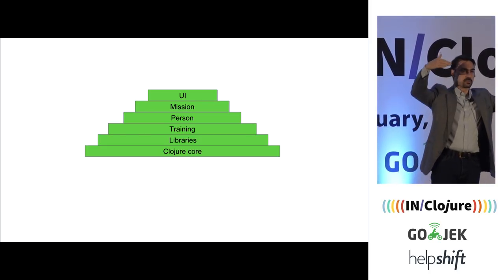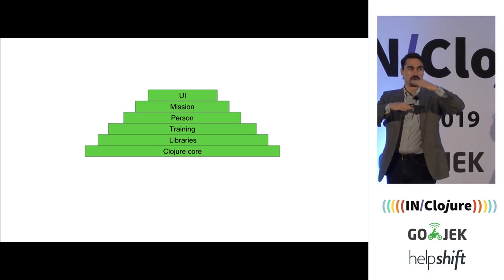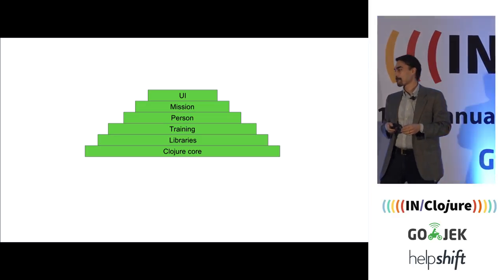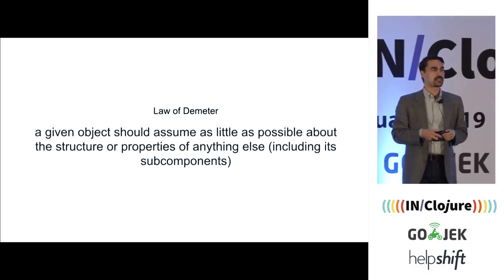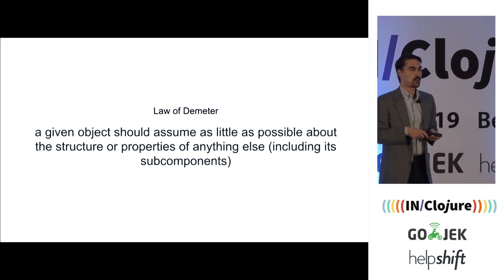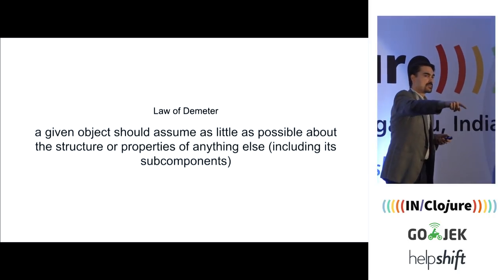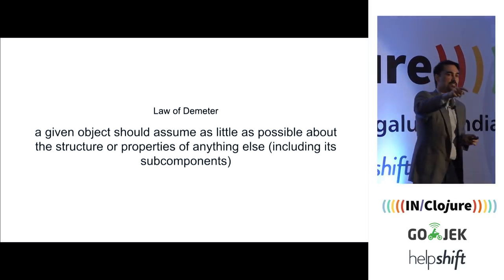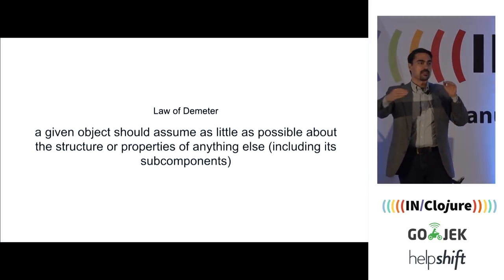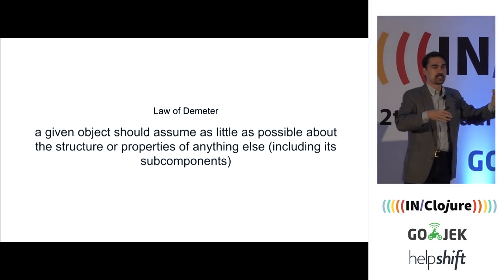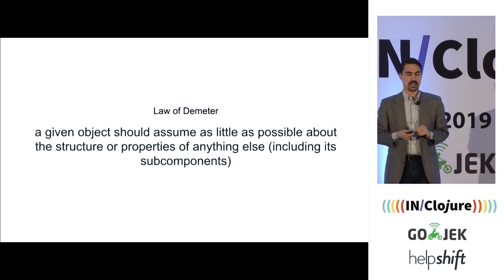So then we have layers on top of libraries: training, then person referring to training, then mission above that, and the UI at the top. In the OO world they talk about this all the time — they call it the Law of Demeter. You're not supposed to do a long chain of dots, because you're tying yourself to that entire chain. You have to know so much about this huge chain of objects. You should know as little as possible about everything down the line and how things are implemented.